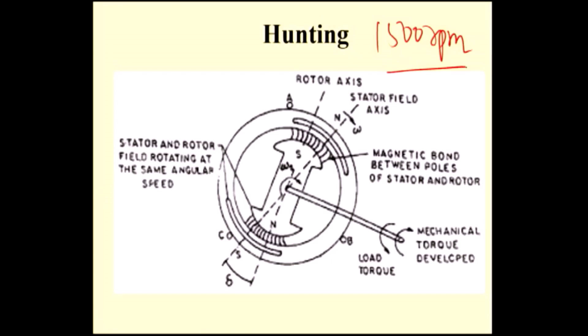The rotor is magnetically locked with the rotating magnetic field. Assume the motor is running in no-load condition. What is delta in no-load condition? In no-load condition, the rotor is exactly synchronized — magnetically locked with the rotating magnetic field. So the delta value is 0 at no load. This is normal operation.